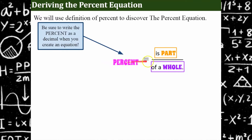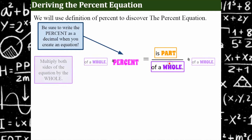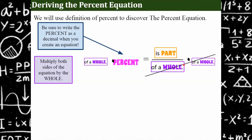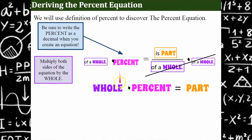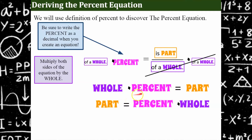In order to rewrite this so that it's no longer a percent equal to a ratio, I'm going to multiply both sides of the equation. I have an equal sign, so that makes it an equation — the percent equals the ratio part over whole. I want it to be one line, one linear equation. So I'm going to multiply both sides by the whole, which clears the denominator. A whole divided by a whole — anything divided by itself — is one. On the other side, I'm left with whole times percent, and in the numerator just the part.